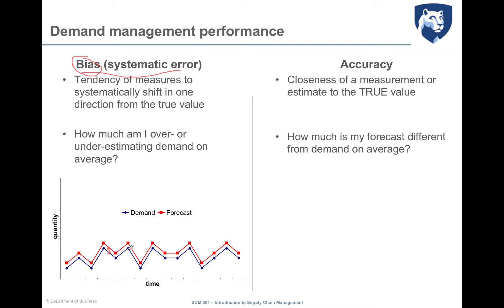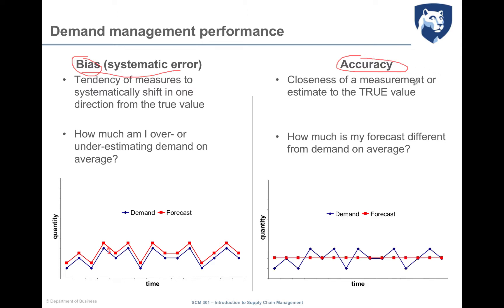So always higher than demand, or always lower than the demand. The spread between the actual value and the forecast value is instead measured through accuracy. Accuracy measures the closeness of the estimates to the true value — how much my forecast is different from the real demand, measuring how much I am able to hit the real number.